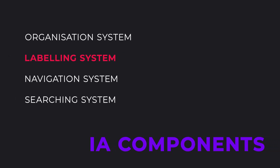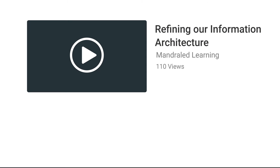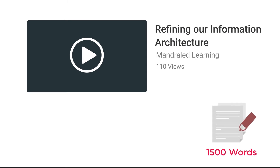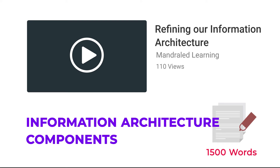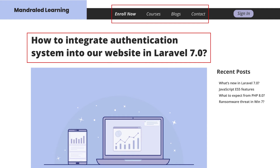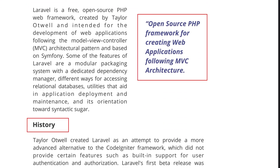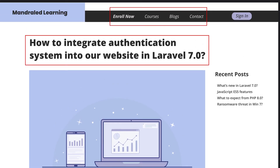Moving on, the next component is the labeling system. To label is to give something a name. To make you practically understand this concept, let us consider this video which contains 1500 words in its script. But if I had to describe it only using three words, I would say: information architecture components. In a similar way, each navigation link's title, each heading that is going to appear in the content, and each caption that is going to appear along with images or tables has to be labeled. Keep in mind that the labels you choose should be very simple to understand and follow.